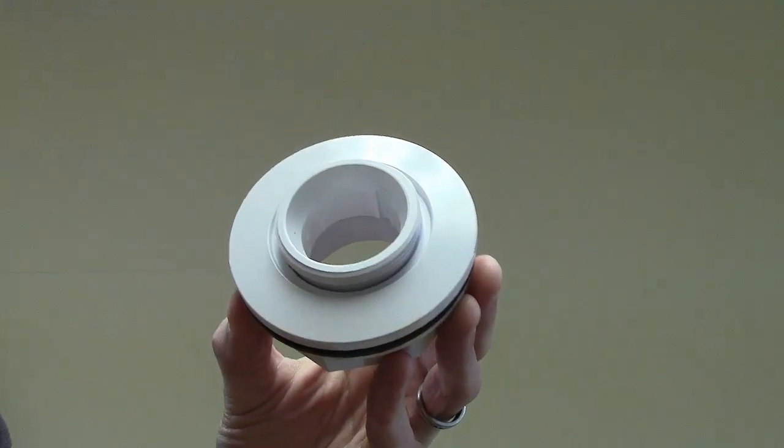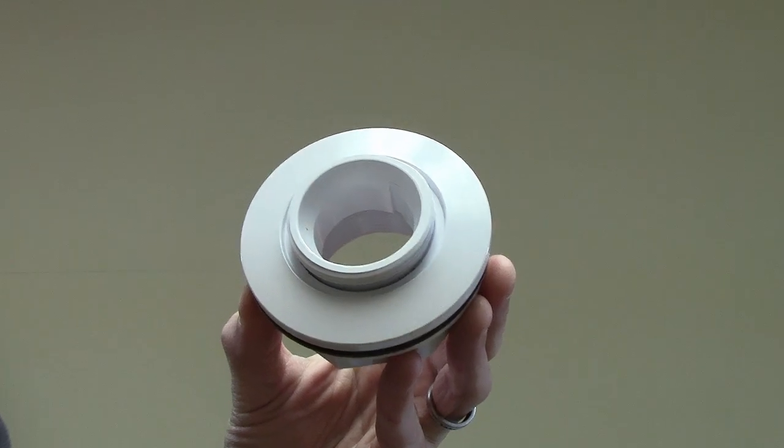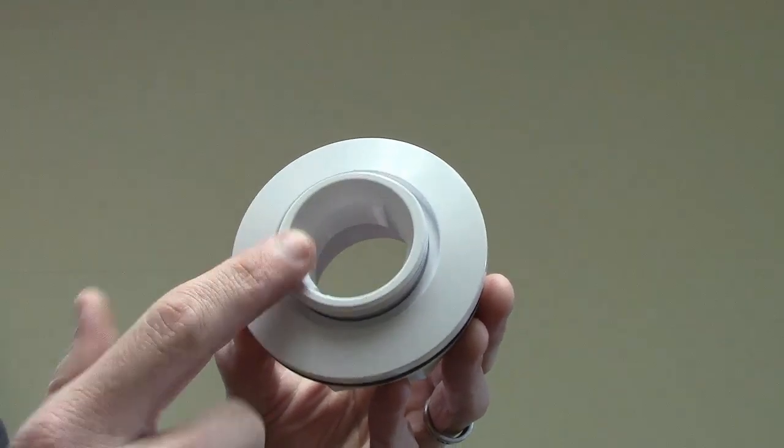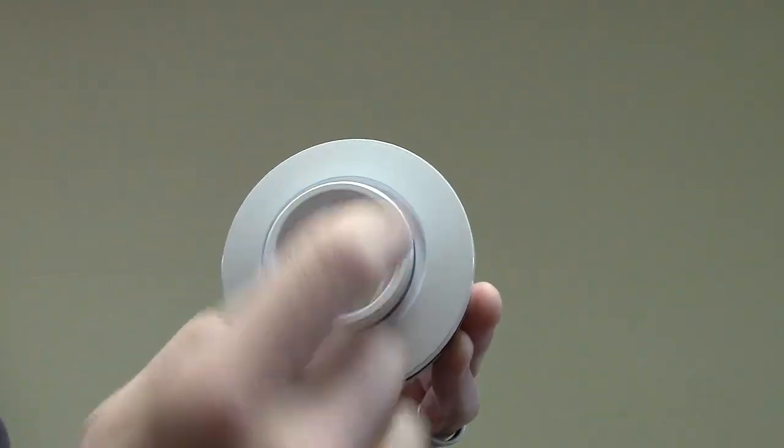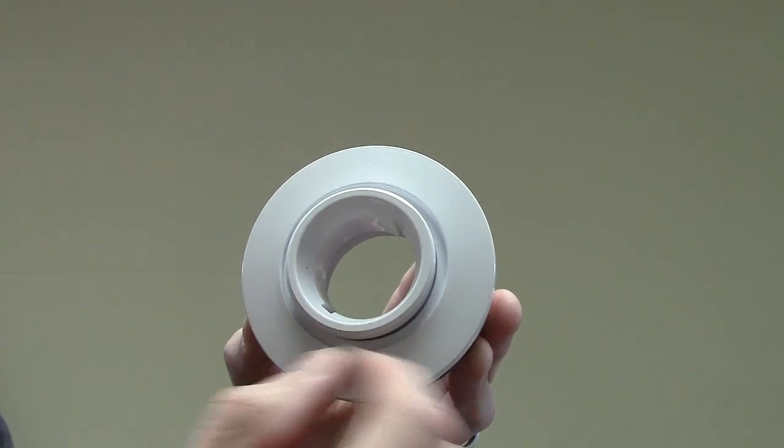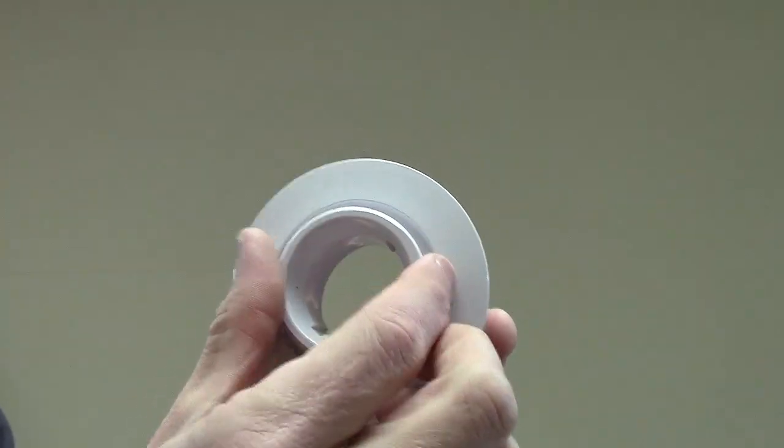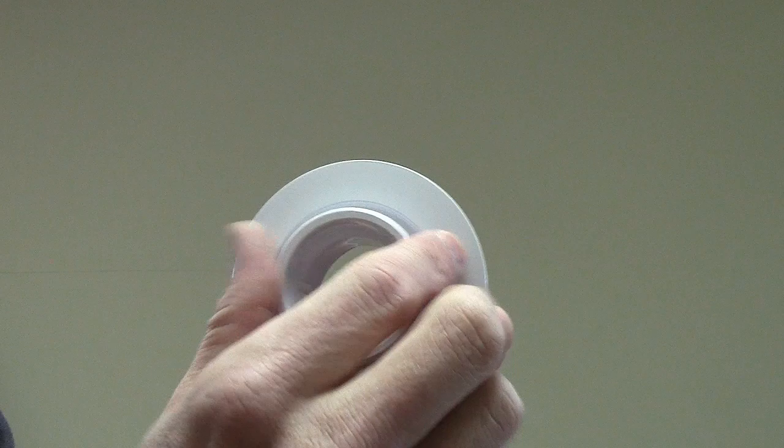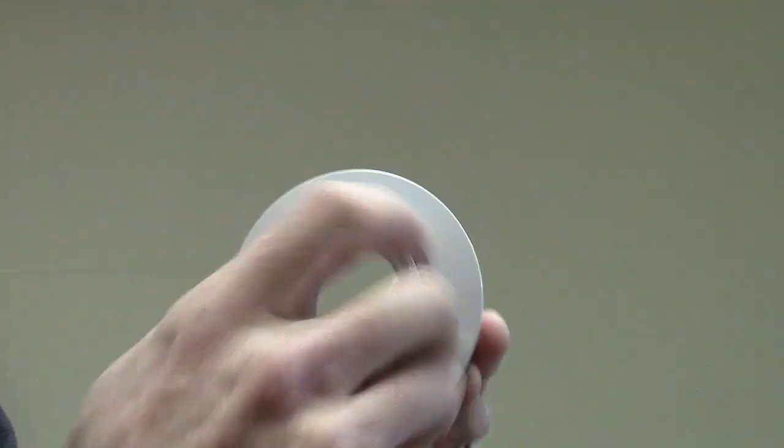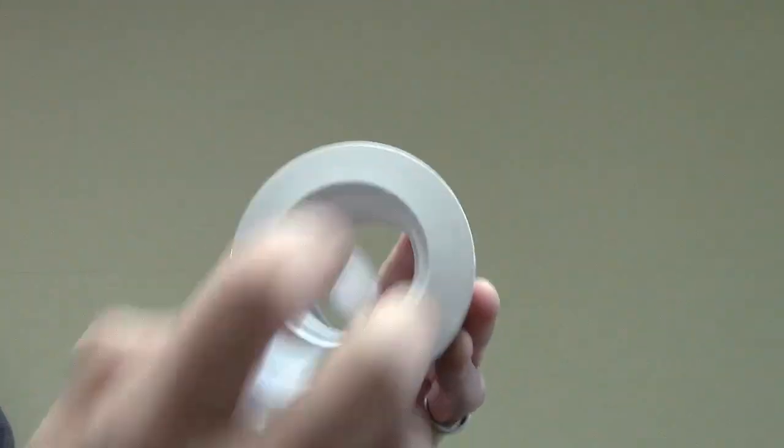So, if you're trying to connect a Polaris, a fountain, something of this nature, you're going to see outside threads where you actually need female inside threads. So, what you're going to do is also unscrew this as well. This is actually part of the eyeball assembly.